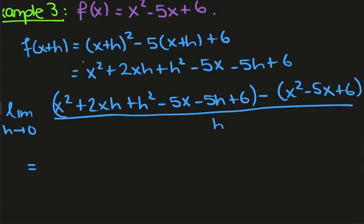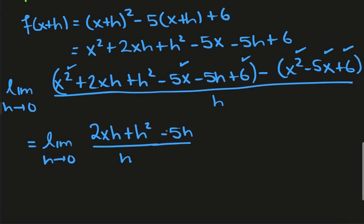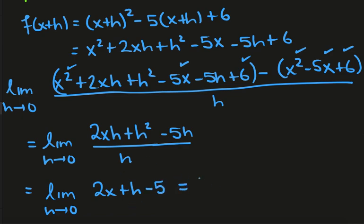We can cancel out the x squared, the 5x, and the 6 terms, leaving the limit as h tends towards zero of 2xh plus h squared minus 5h, all divided by h. Dividing every term by h gives the limit as h tends towards zero of 2x plus h minus 5. Setting h equal to zero gives us 2x minus 5.